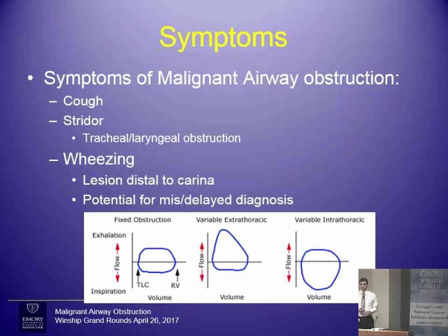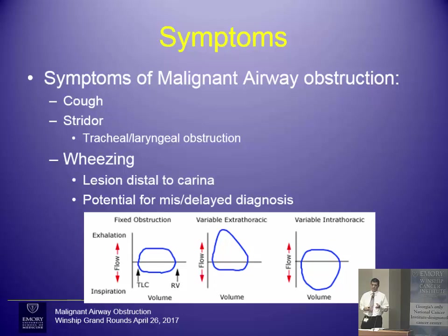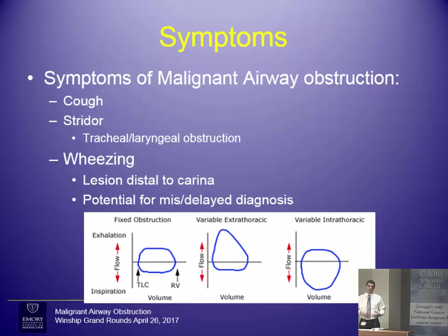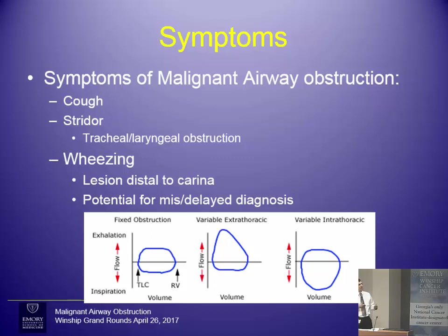Patients present with a variety of symptoms — cough and shortness of breath are the most common, and a lot of patients present with hemoptysis. If the obstruction is more in the trachea and proximal airway, you'll notice stridor, but only after the airway is typically five millimeters or less. Many patients with moderate obstruction or obstruction distal to the main carina initially present with wheezing, which can be problematic because it leads to delay in diagnosis or misdiagnosis. I've seen patients treated for asthma for years who actually had a carcinoid tumor sitting in the airway causing their wheezing.